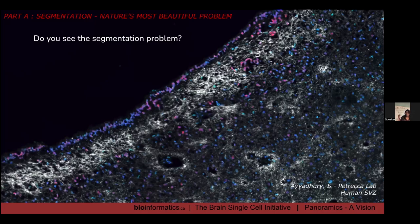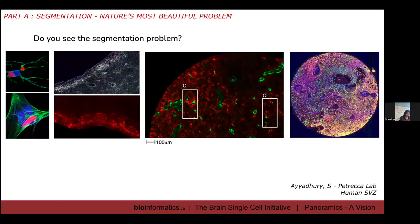Why is this important in spatial transcriptomics? It depends on how accurately you want to profile your cell types. In the brain, cells are complex in shape — neurons, for instance, there's no way we can segment a neuron currently. This shows how diverse and complex the architecture is, from single cells right up to the tissue level and multicellular structures at the organ level.